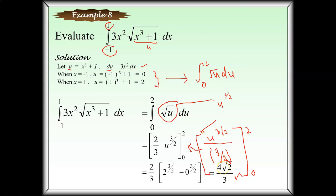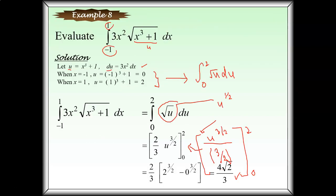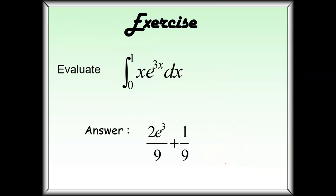That's all for the 8 examples, which involved the properties we've learned and the substitution technique from chapter 6. You might want to try this exercise: integration from 0 to 1 of x times e^x dx. What method are you going to use? It's up to you, as long as you get the right answer.